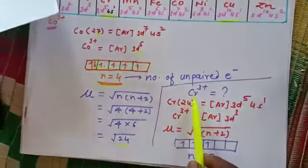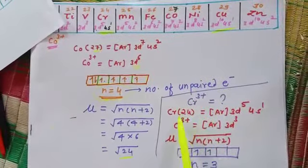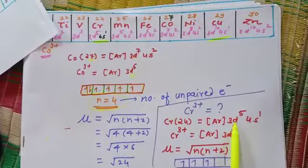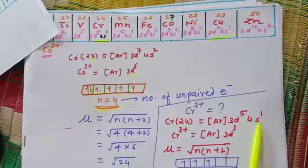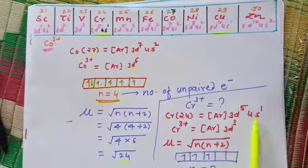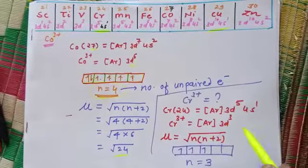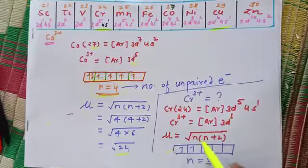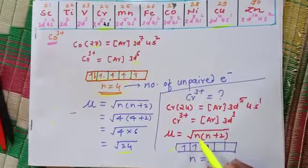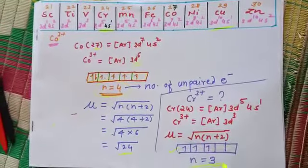Now B, we have to check. That is Cr³⁺. In Cr³⁺, you can see here, Cr is exceptional. That is 3d⁵ 4s¹. Cr³⁺, that is 3d³. So unpaired electrons I have are 3.